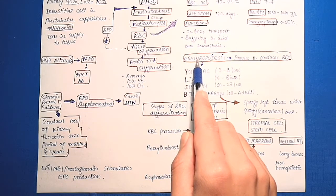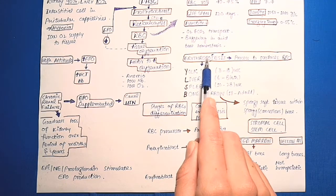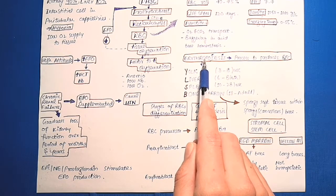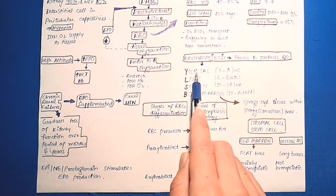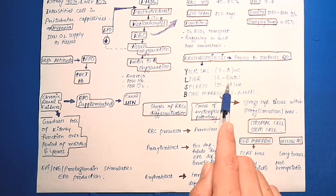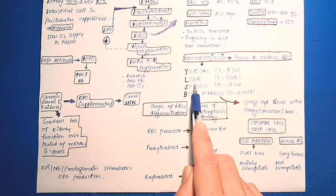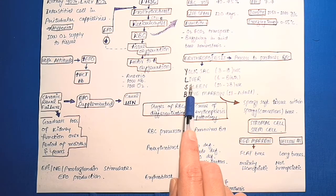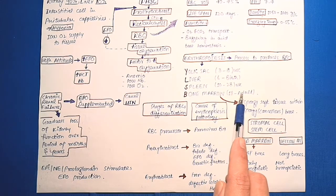In the early weeks of embryonic life, primitive nucleated red blood cells begin their production in the yolk sac. And from the 6th week until the 28th week or until birth, they are produced in liver and spleen. And from the 18th week until adulthood, they are produced in bone marrow.